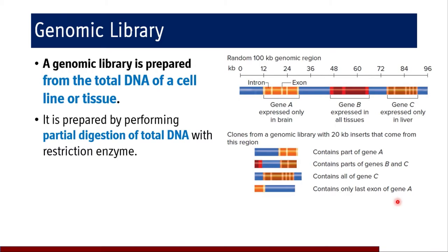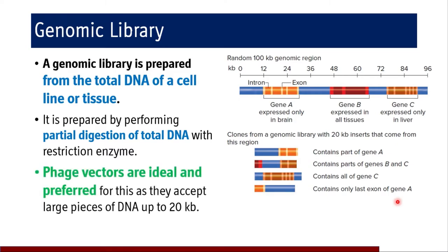Because it is total DNA of a cell that is subjected to digestion, phage vectors are ideal and preferred for genomic libraries, as they can accept large pieces of DNA up to 20 kilobases per insert.